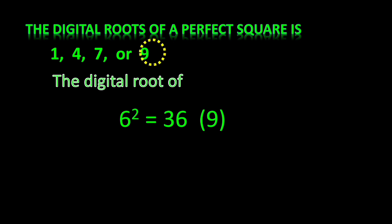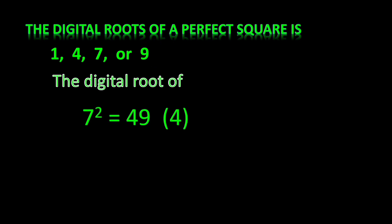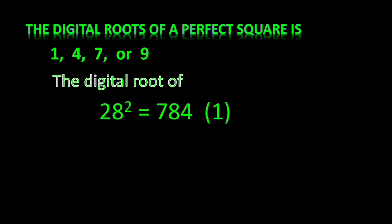9 is the digital root of 6². 7² equals 49: 9 plus 4 equals 13, then 3 plus 1 equals 4, so 4 is the digital root of 7². For 28²: 28² equals 784. 7 plus 8 plus 4 equals 19, then 1 plus 9 equals 10, then 1 plus 0 equals 1. The digital root is 1. So for any perfect square n², the digital root is always either 1, 4, 7, or 9.